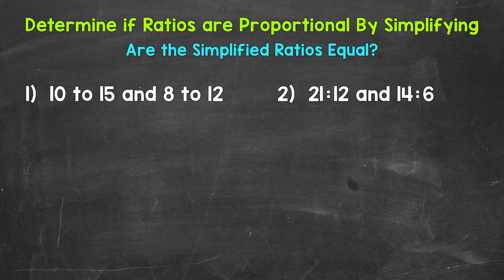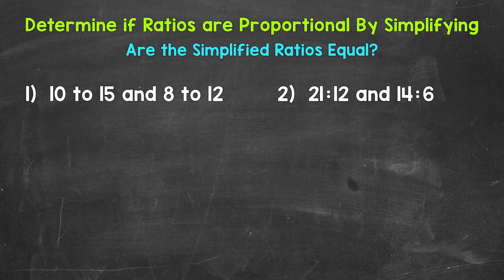Let's jump into number 1 where we have 10 to 15 and 8 to 12. When it comes to checking if two ratios are proportional using simplifying, all we need to do is simplify both ratios. If they simplify to the same ratio, they are proportional. If they are different, they are not proportional. Let's set these ratios up in fractional form and simplify.